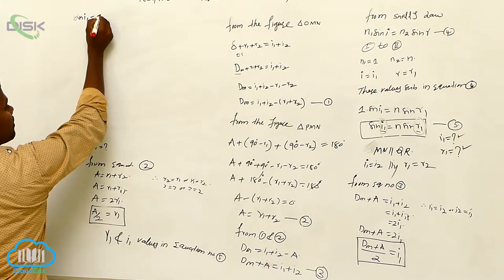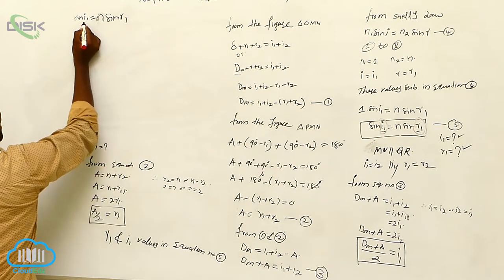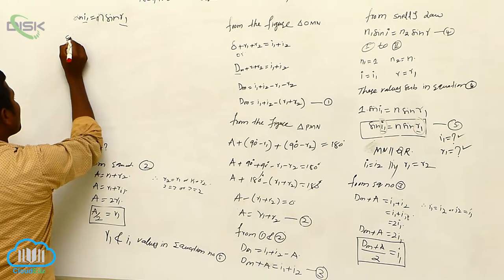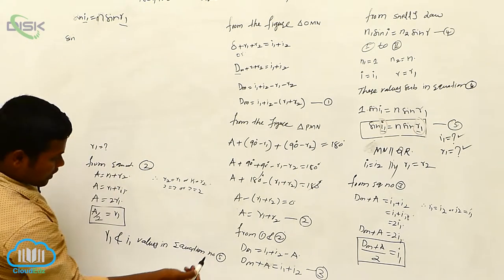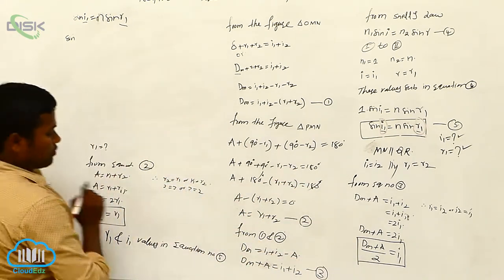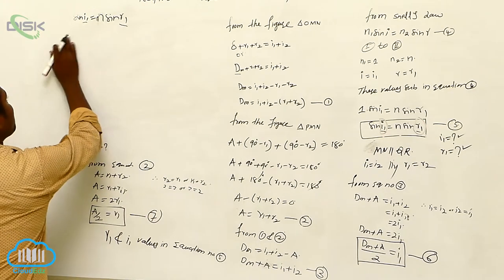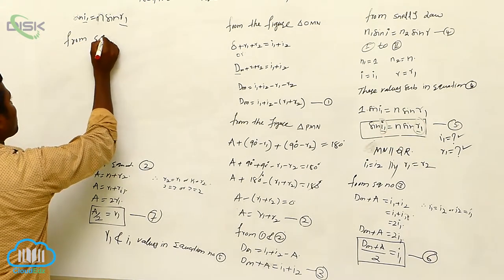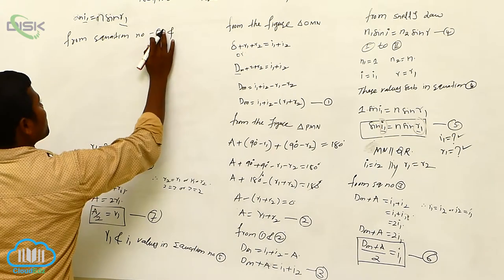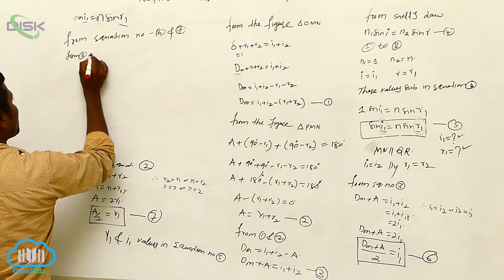n sine i1 is equal to n sine r1. I have r1 and i1. From equation number six and seven: from six and seven, okay.